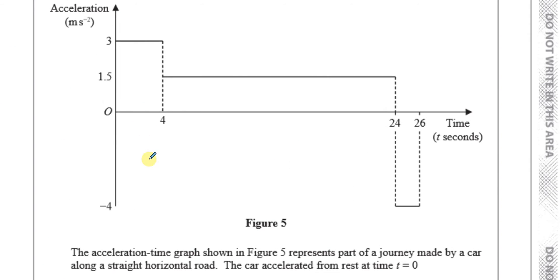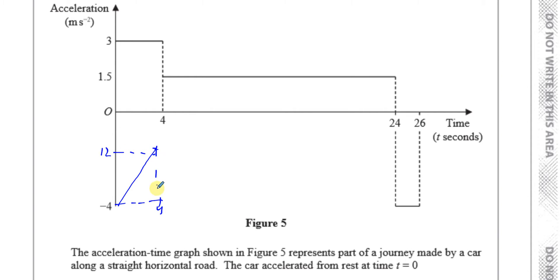A third method is to consider what the velocity-time graph would look like. With constant acceleration it's a straight line going up. For the first 4 seconds it reaches 12 metres per second, so the distance is the area of the triangle: one-half times 4 times 12, which again gives 24 metres. There are lots of ways to do this question.